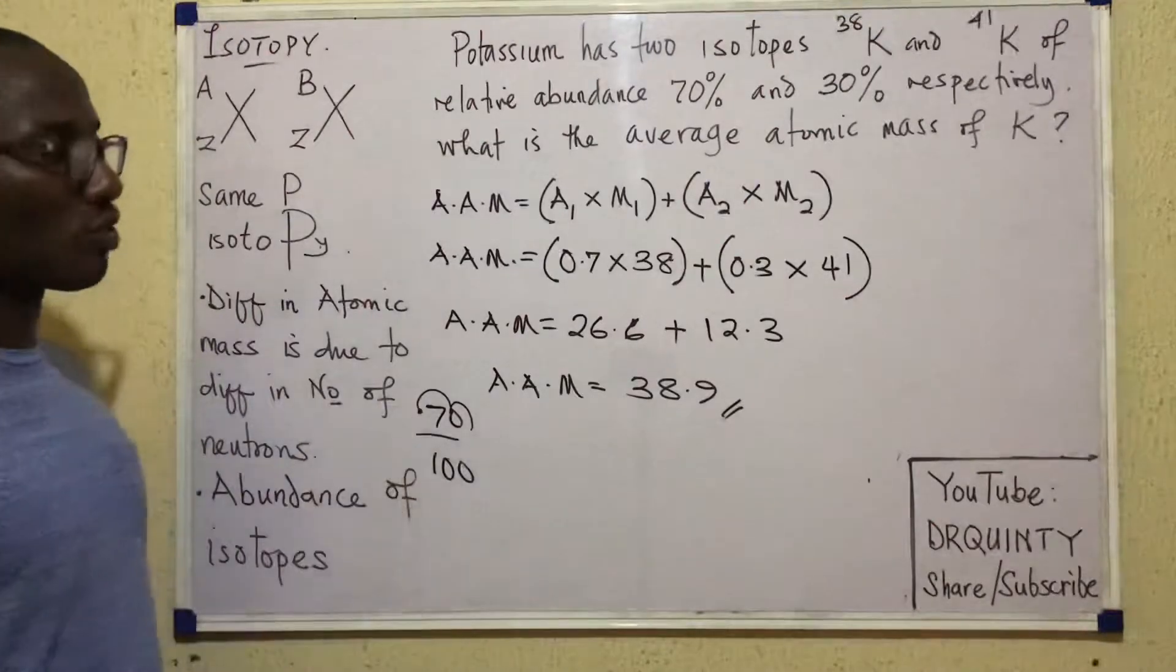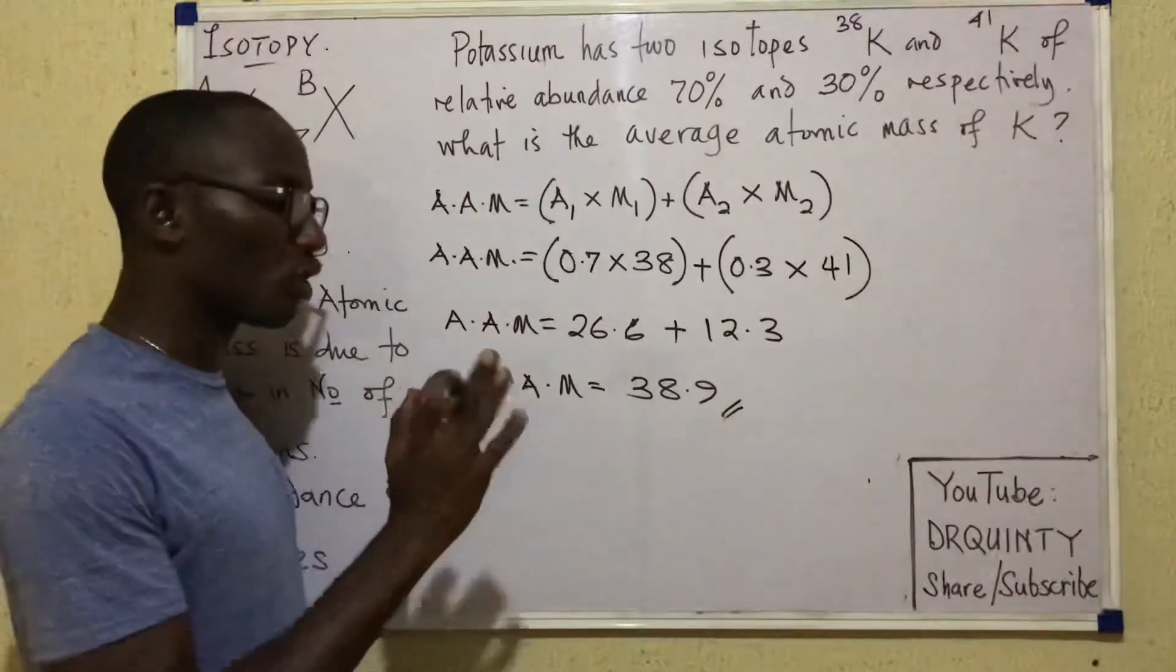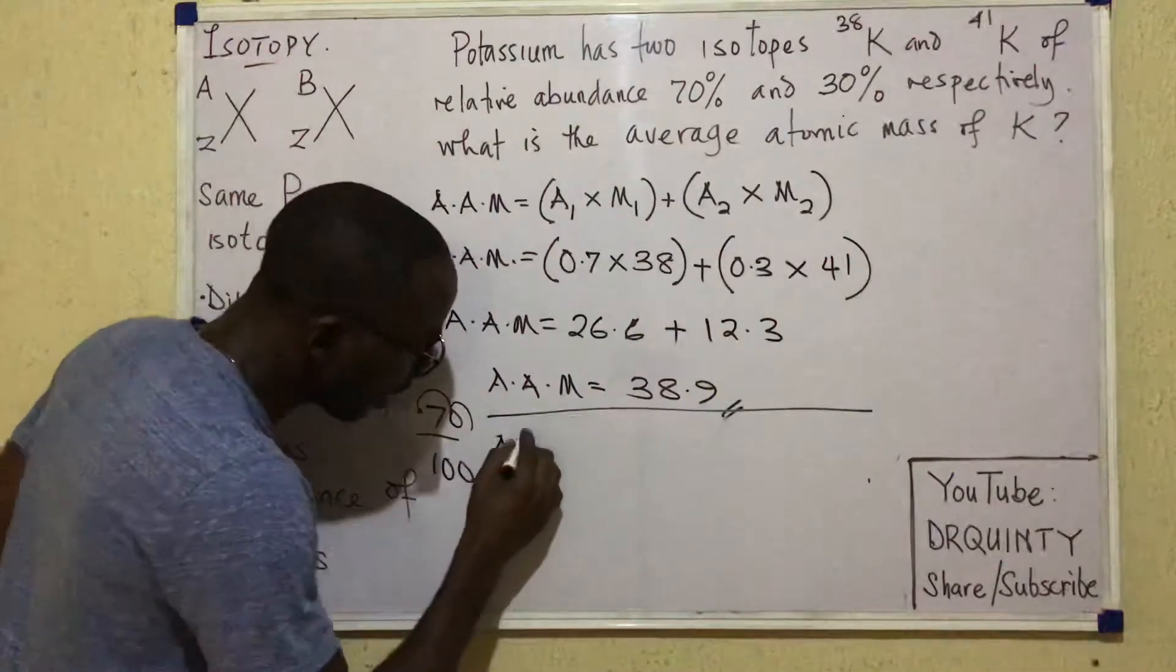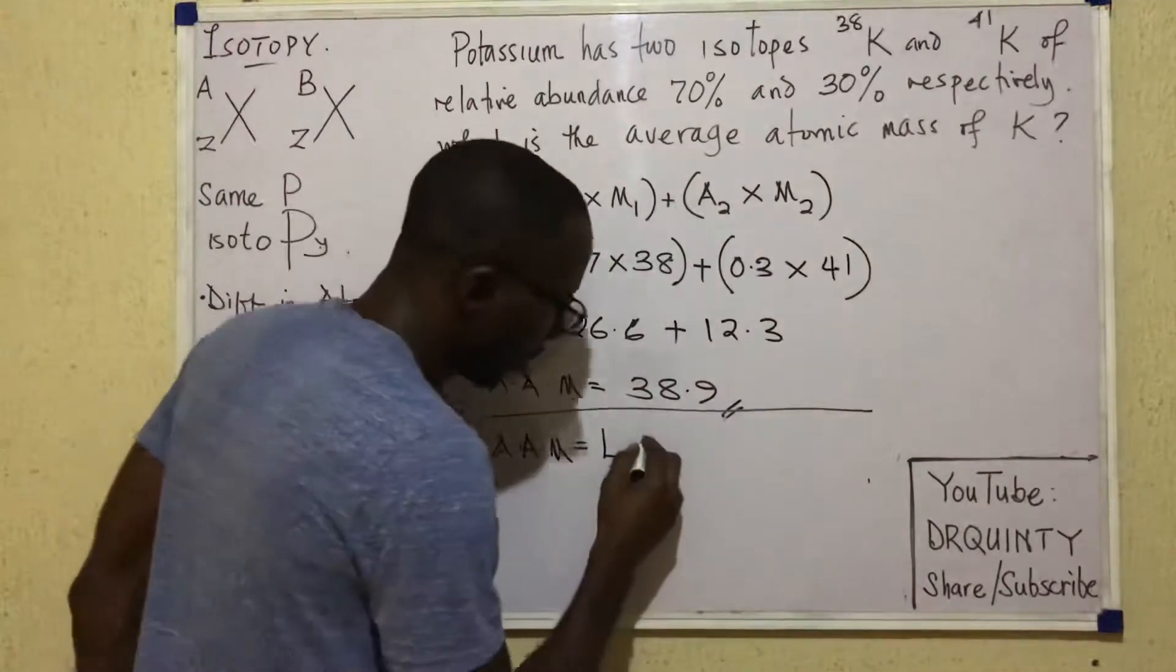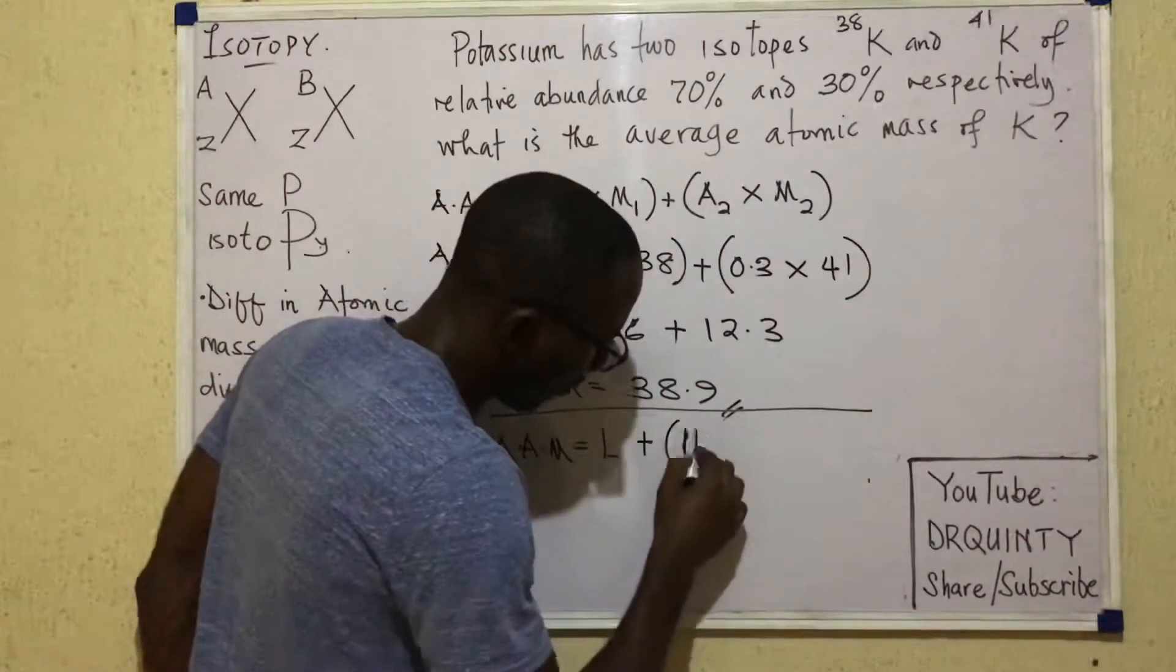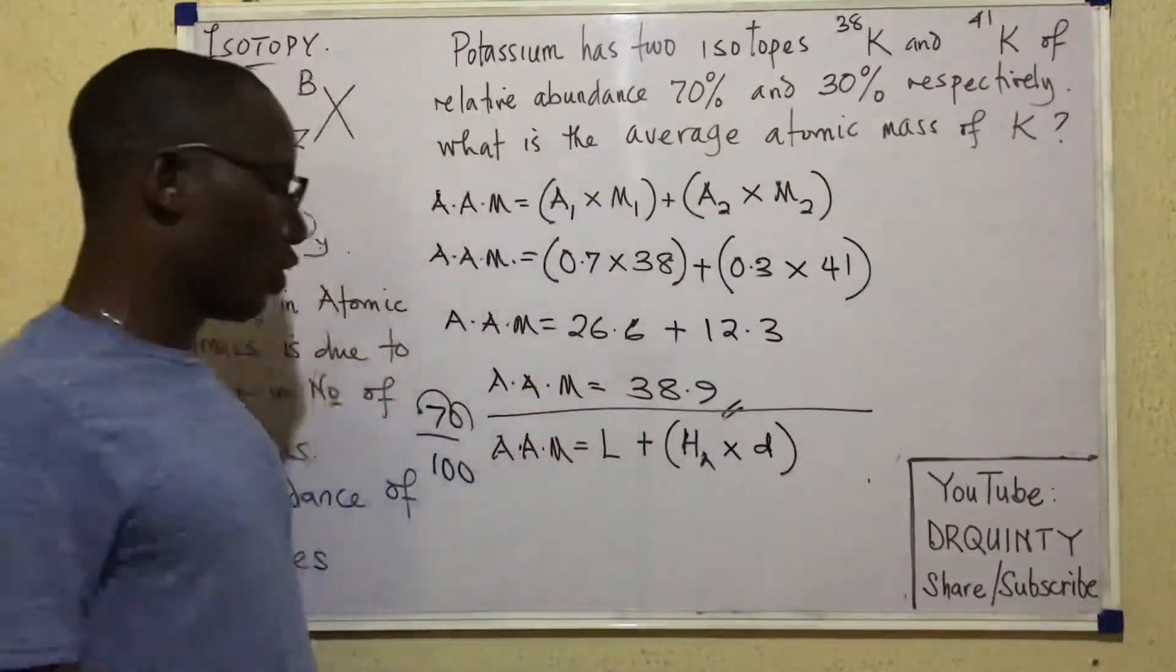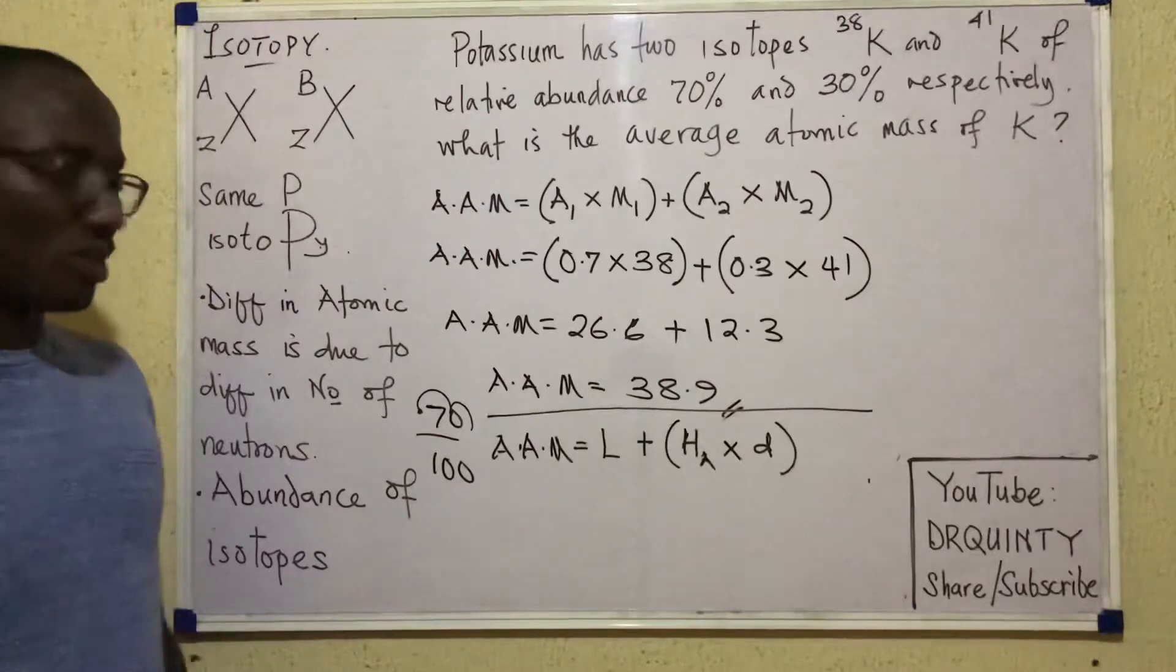So I've solved this question very easily. But if I were to try to use a short formula to solve this question more like a shortcut, then I would write something like this. So I would say average atomic mass equals light plus heavy, or maybe HA, however you choose to say that, times D.